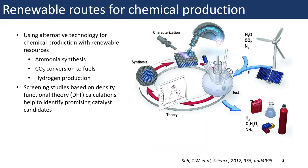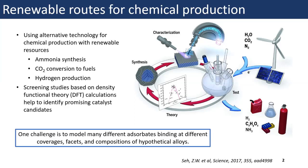A great challenge is finding alternative technology for chemical production that also relies on renewable resources. This includes processes like ammonia synthesis, CO2 conversion to fuels, and hydrogen production. We can search for catalysts that enable these processes through accurate screening studies based on density functional theory calculations. However, one challenge is to model many adsorbates binding at different coverages on different facets on countless compositions of hypothetical alloys.